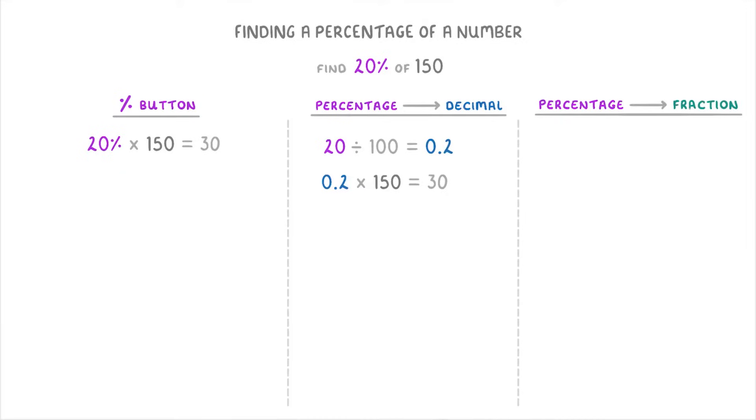Or if you wanted to use the fraction technique, you just take the percentage, so 20, and make it a fraction by putting it over 100. So 20% is 20 over 100. And then we can multiply that by 150 to get 30.